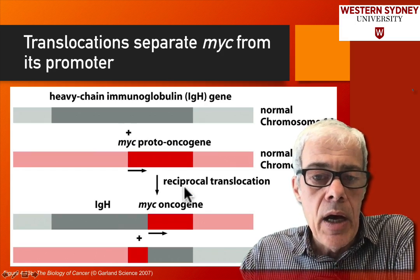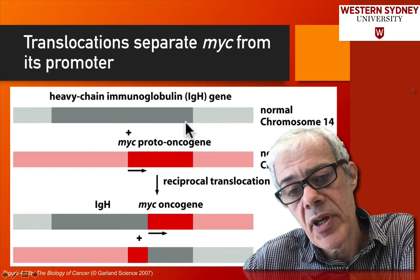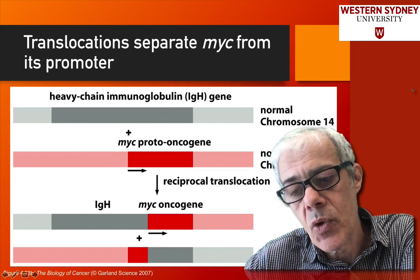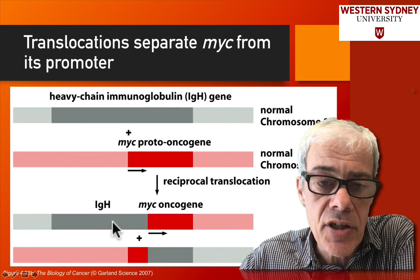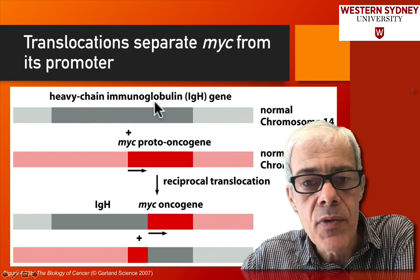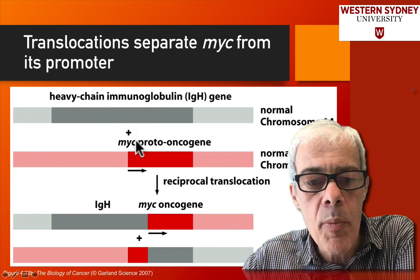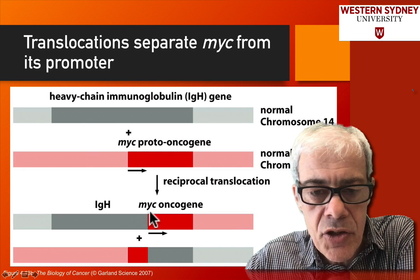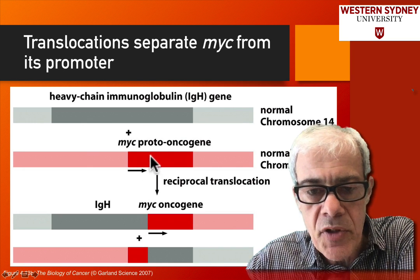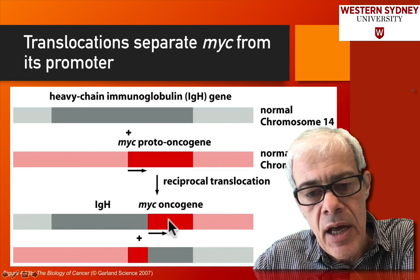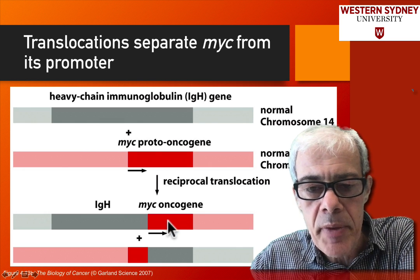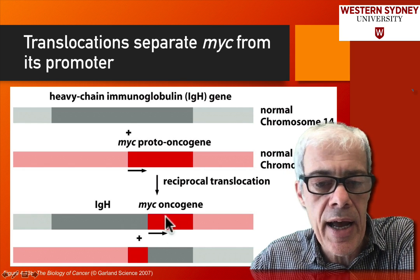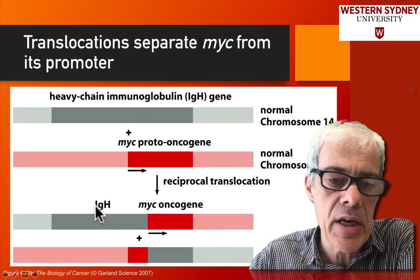There's a diagram here showing the normal chromosomes — these are the two normal chromosomes 8 and 14 that we've been looking at in these other diagrams. Here you can see that in the translocation, the promoter for the immunoglobulin is then attached, and the c-MYC gene sequence gets added to it. So you get this constructed sequence of an oncogene being transformed into a tumour agent because it's being expressed from the immunoglobulin promoter.